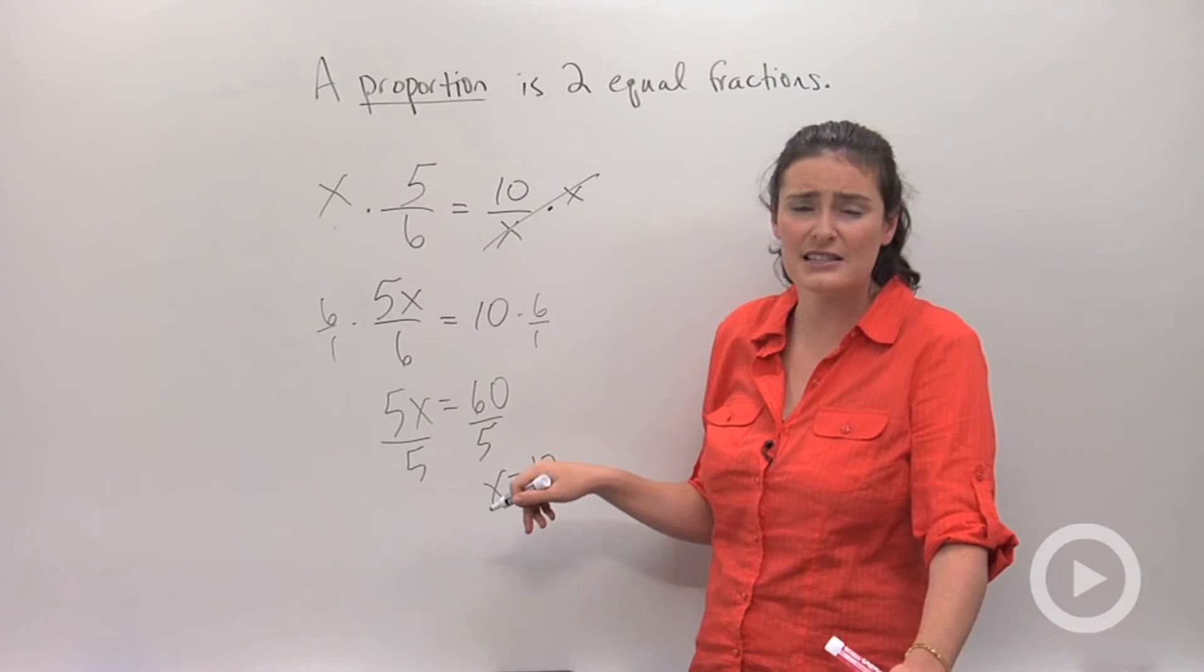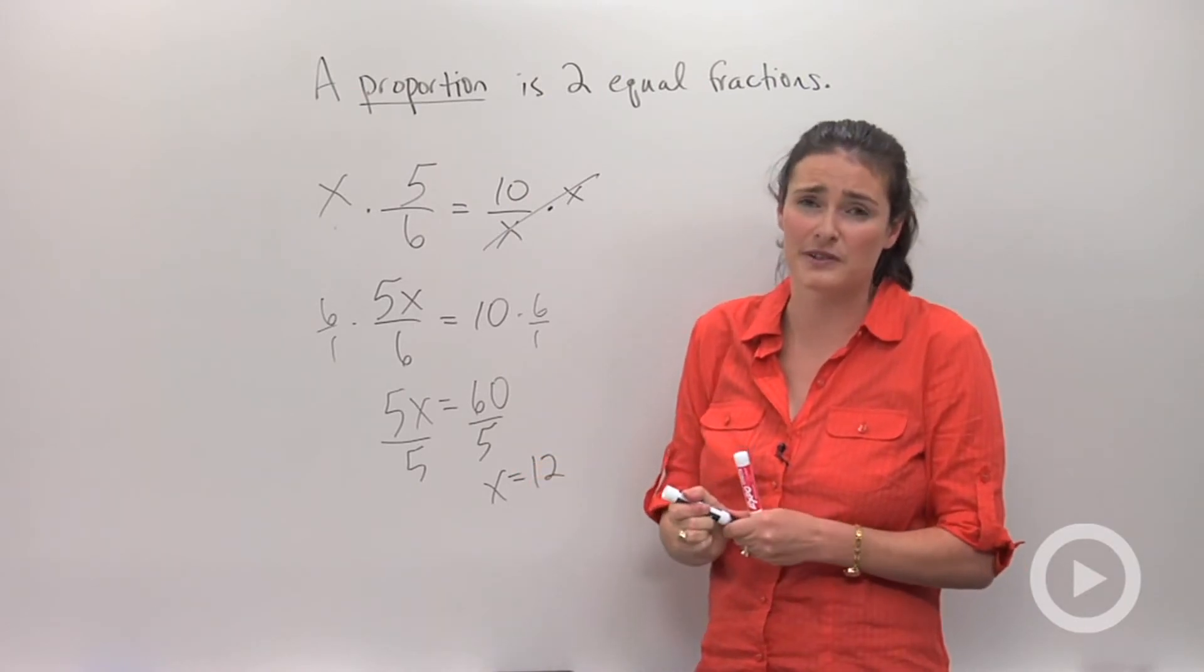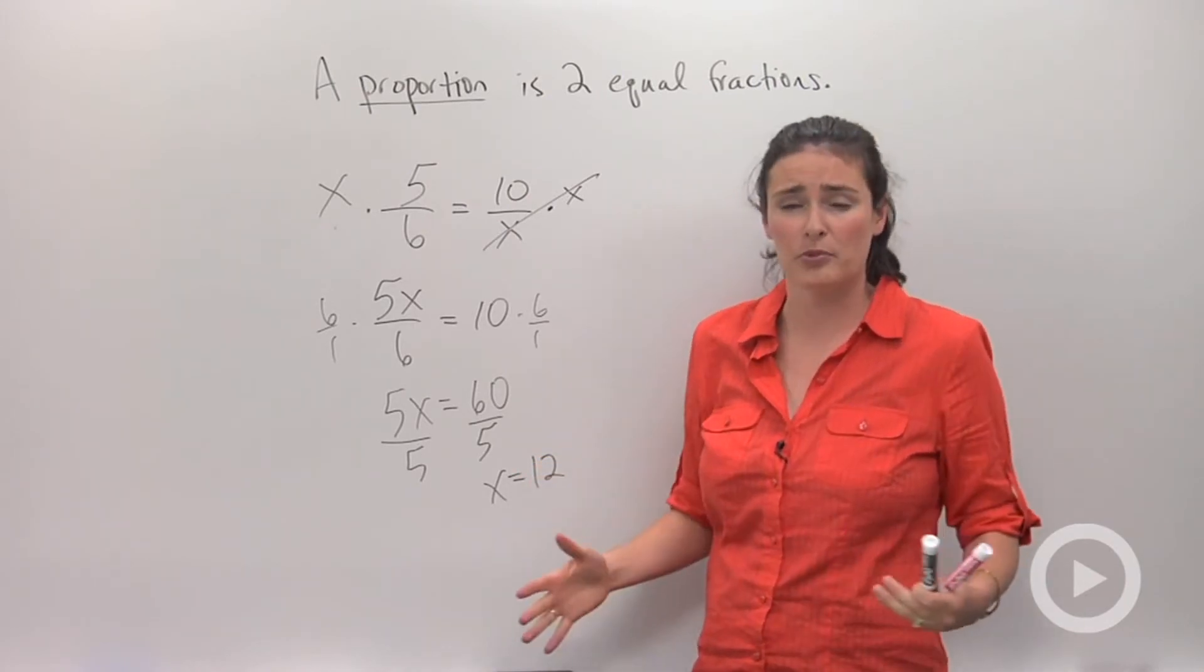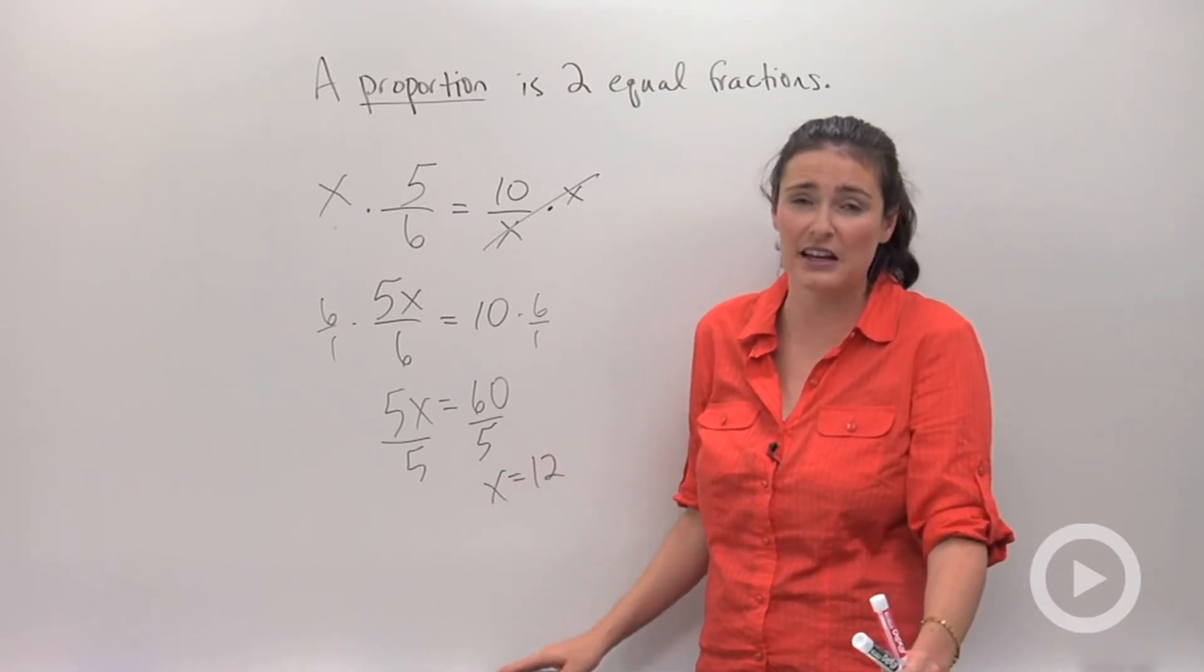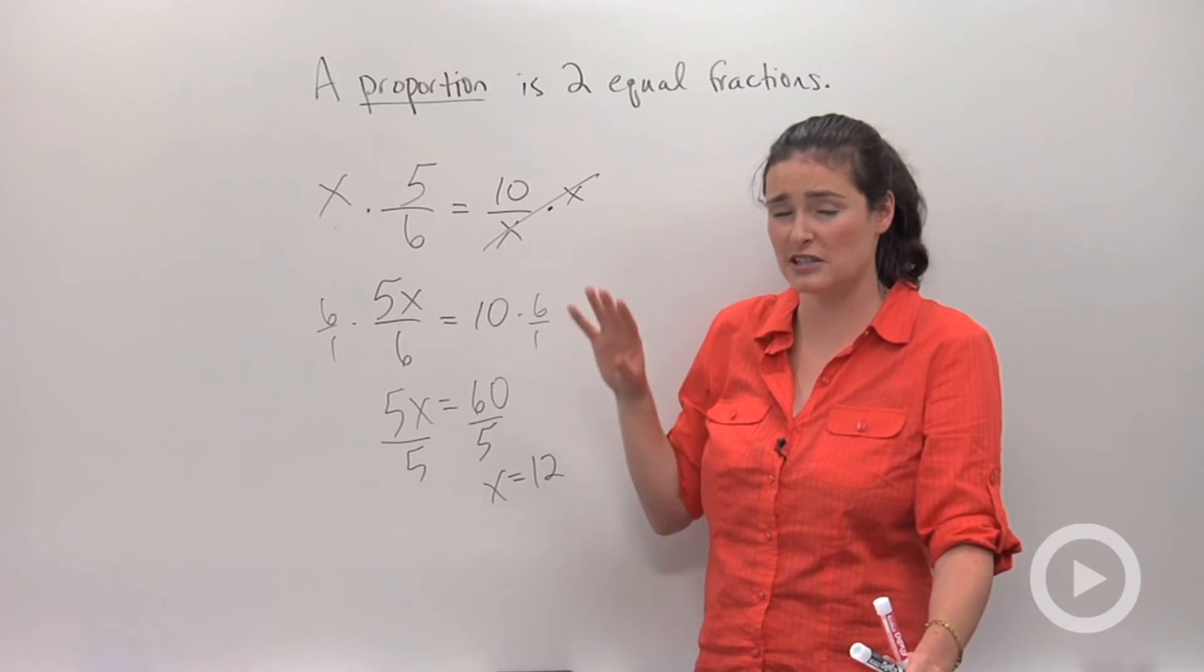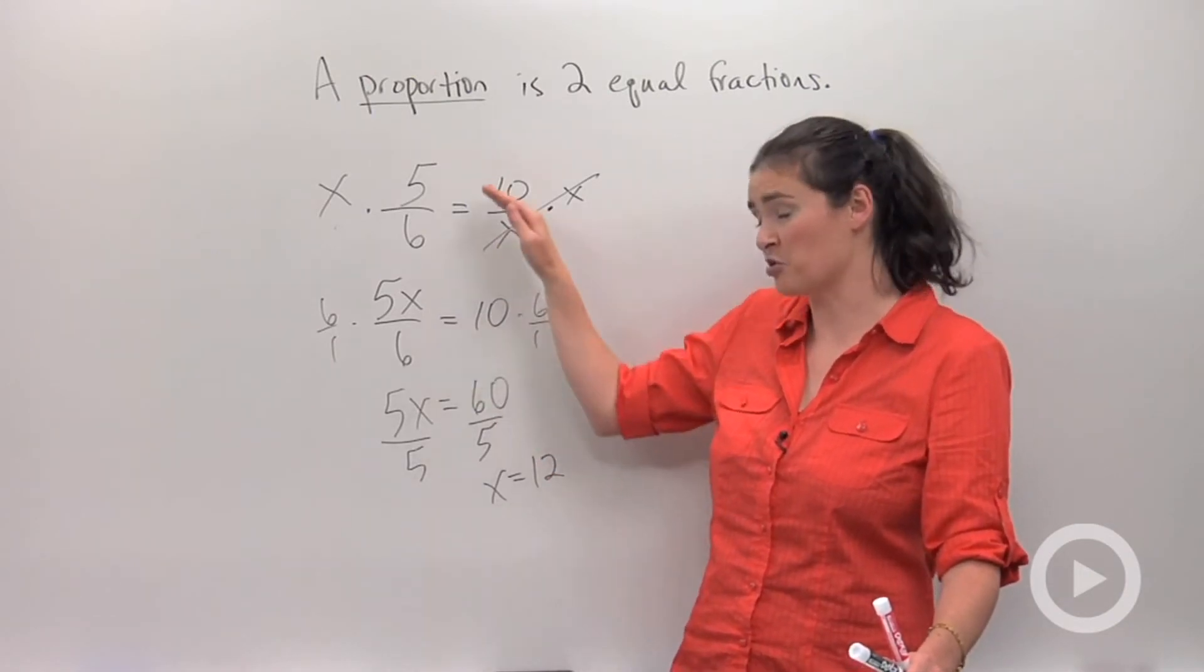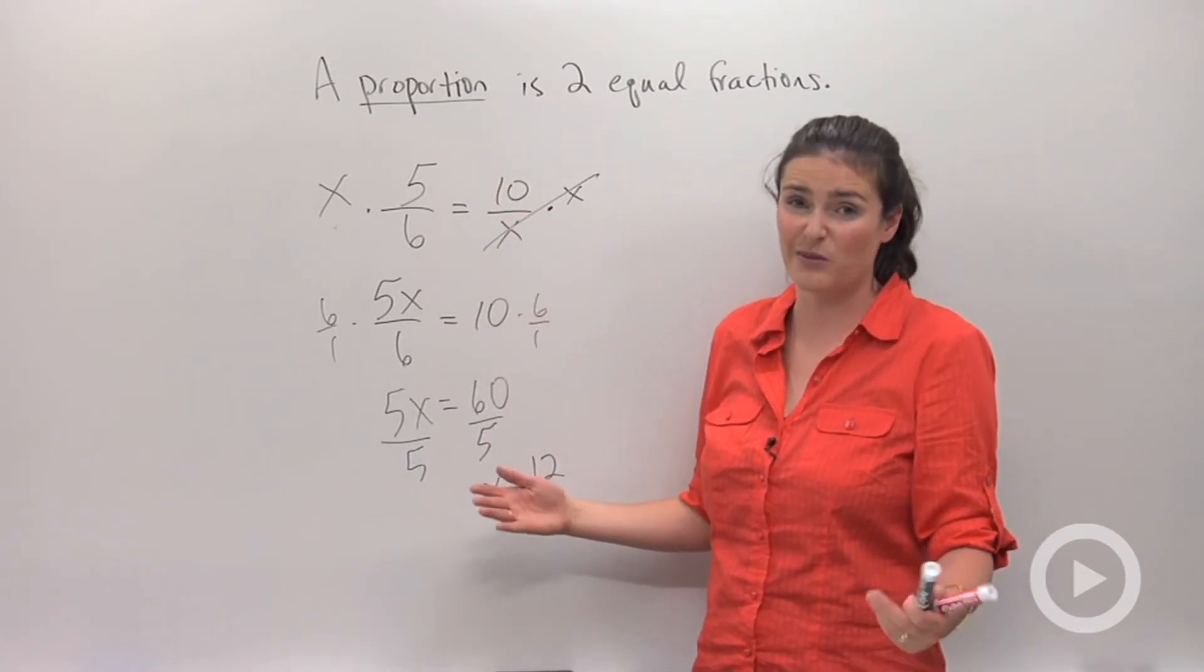This way is the longest, but it's the most mathematically precise. A lot of students jump right to cross-multiplying because they think it's pretty easy. And you're right, it is probably the easiest method. But you have to make sure that you understand cross-multiplying is really doing this process in fewer steps.